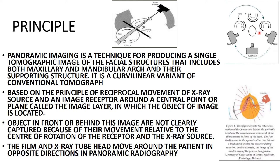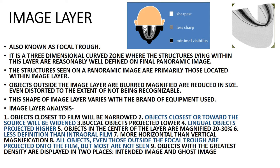The image layer — also known as the focal trough — is a three-dimensional curved zone where structures lying within this layer are reasonably well-defined on the final panoramic image. If structures are not lying in this image layer, they will appear blurred, magnified, or distorted to such an extent that they cannot be recognized on your panoramic image.